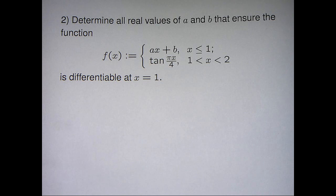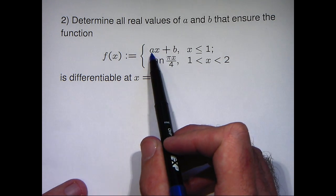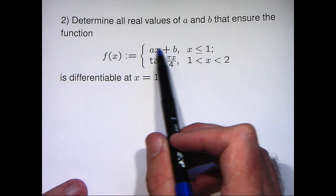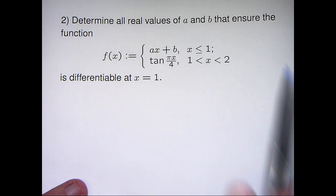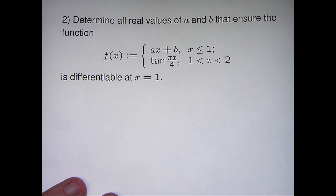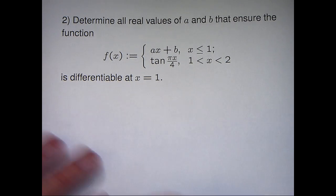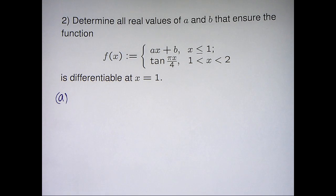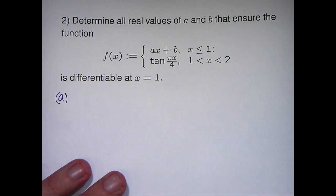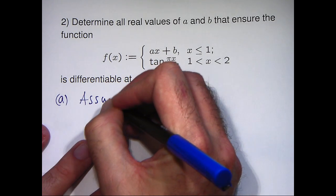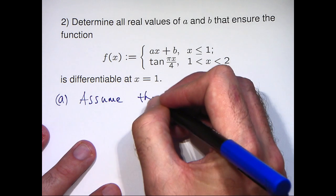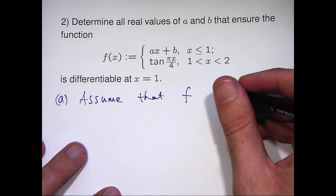Now we're going to have two parts to this solution. Essentially the challenge is to define or choose numbers a and b such that we can piece these two parts together and make a nice smooth join at the point x equals 1. To do that we're going to have a two part approach.